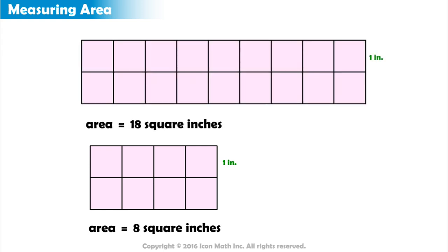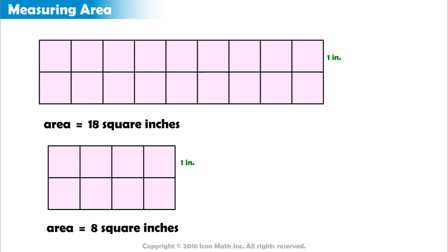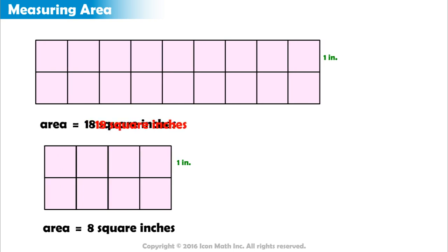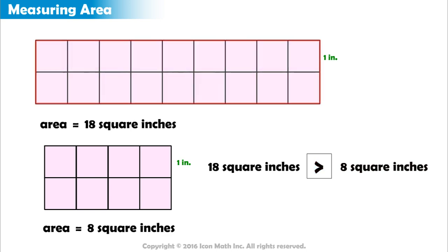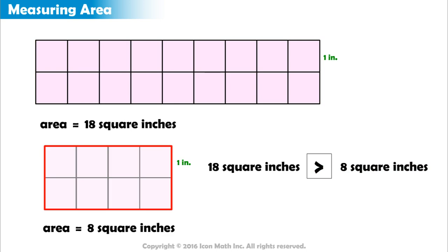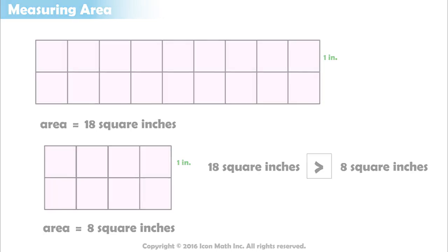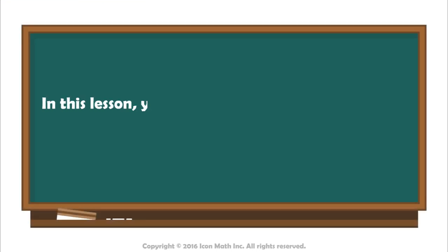Now we can compare areas. Eighteen square inches is greater than eight square inches, so the area of the first rectangle is greater than the area of the second. In this lesson, you learned how to use a unit square to measure area.